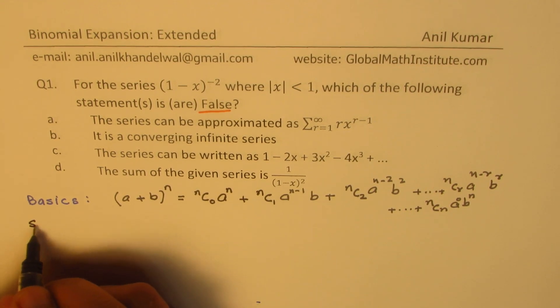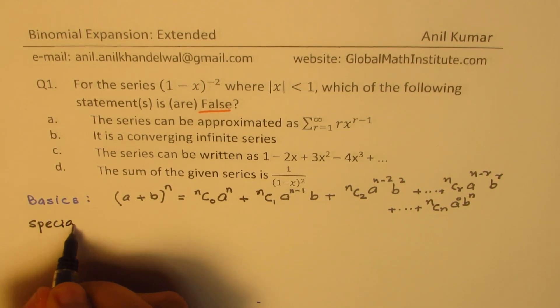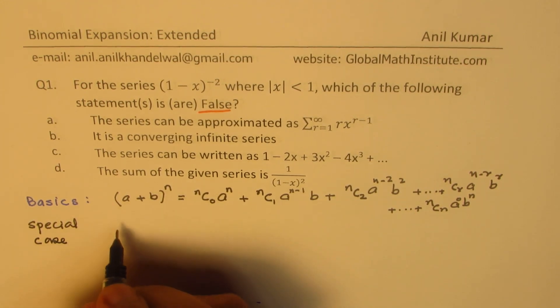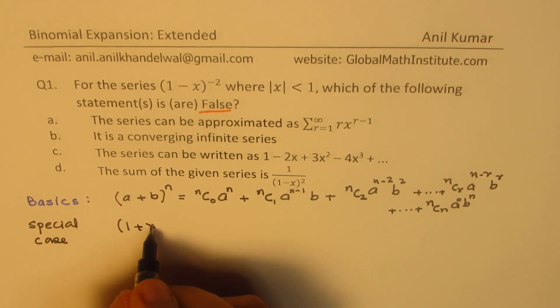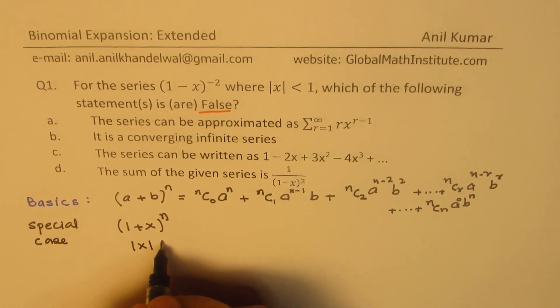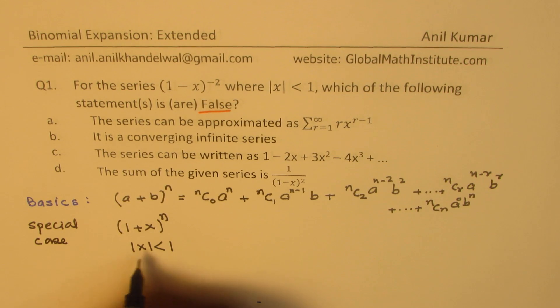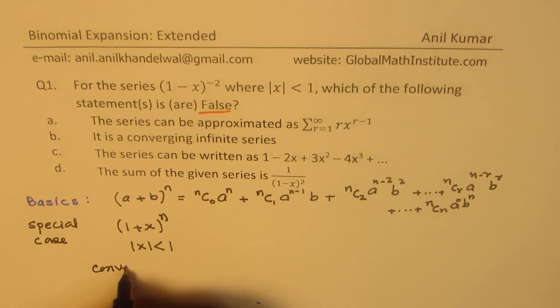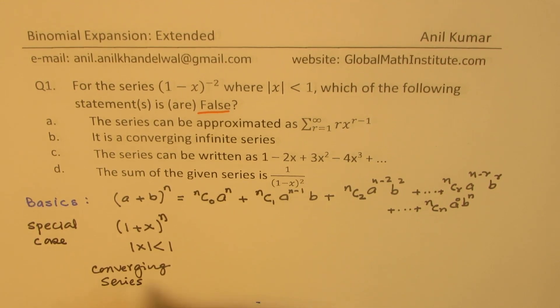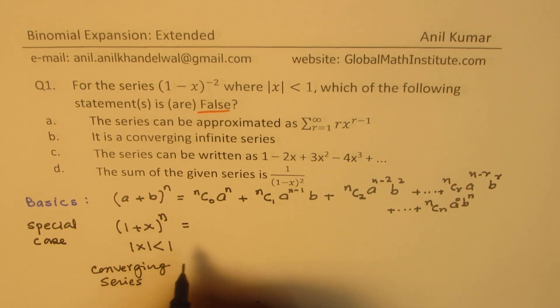Now, the special case which we are talking about is when we could write a function as (1 + x)^n, in which case |x| < 1. So it is, in this case, a converging series.